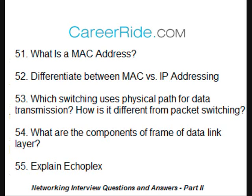Which switching uses a physical path for data transmission? How is it different from packet switching? Circuit switching uses a physical path for data transmission. Initially, a physical connection is established between source and destination, and then the data is sent. In packet switching, data is broken into small parts called packets. Numbered packets may take any shortest route for transmission. In packet switching, a virtual connection is made between source and destination.